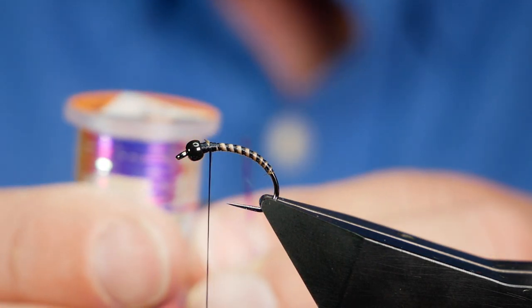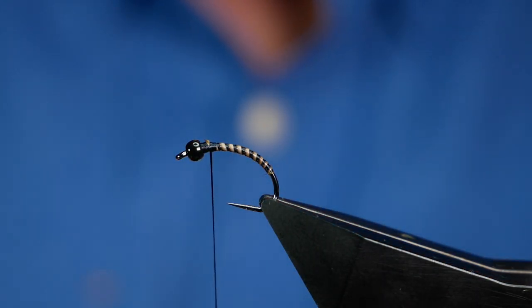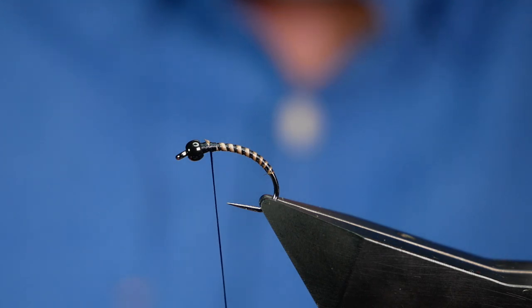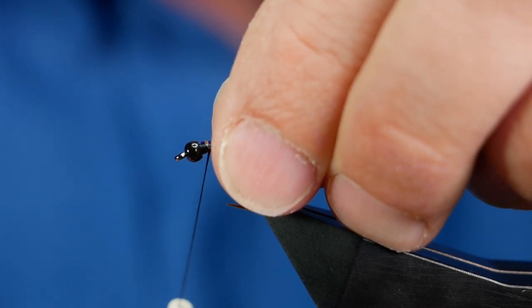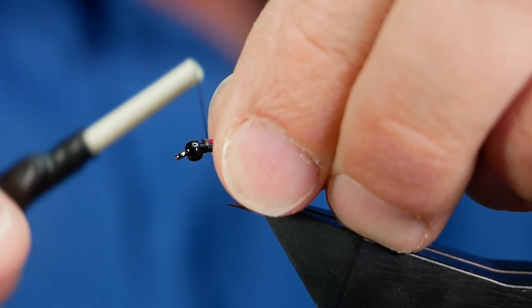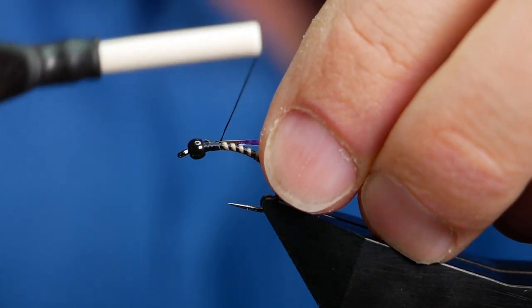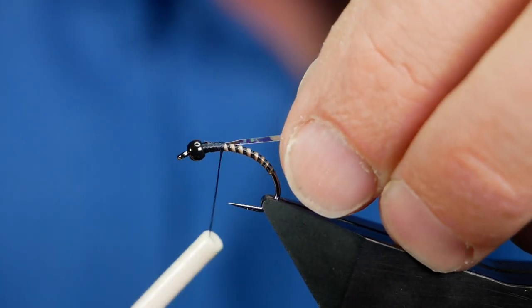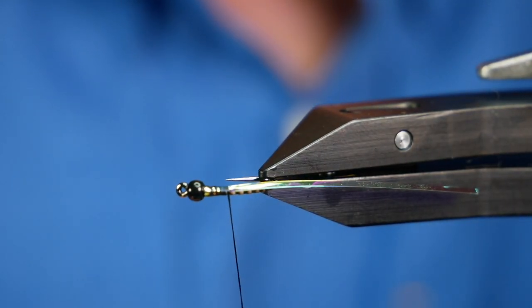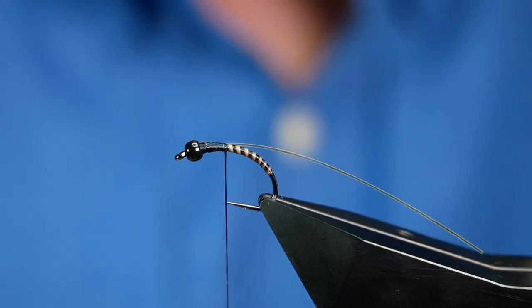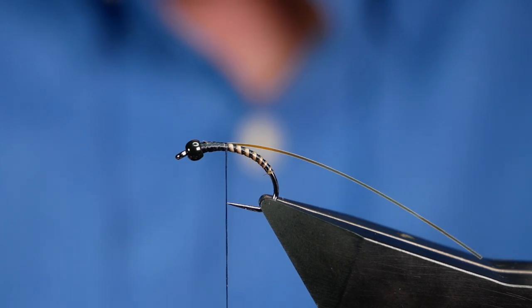Next, I'm going to add my thorax cover and I'm using some Opal Mirage Tinsel, this one's in medium. And it's just to add a little bit of bling to the fly. So I'm going to catch that in. Now I'm catching it in slightly on top on my side. Now when I turn my thread over the shank, that brings my thorax cover on top of the shank. So it's directly on top of the shank. So just start it slightly on your side and as you turn your thread, it brings it over to the shank.